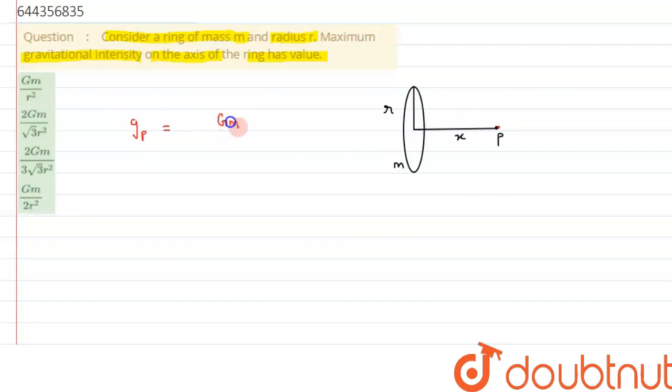equals to GMX divided by (R² + X²) raised to 3/2. Let's suppose this is our equation number 1. So we need to calculate the maximum gravitational intensity. For that, we will use the concept of maxima minima over here.